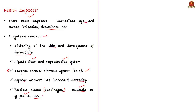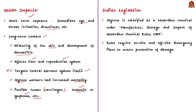Now we will see the existing legal framework to regulate hazardous chemicals such as styrene. Styrene is classified as a hazardous chemical as per the Manufacture, Storage and Import of Hazardous Chemical Rules 1989. These rules require on-site and off-site emergency plans to ensure prevention of any damages. But in this recent gas leak case, there appears to be failure to comply with the said rules and other existing statutory provisions.